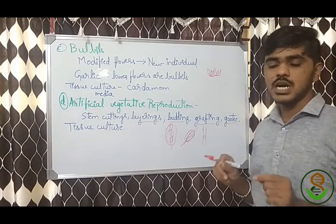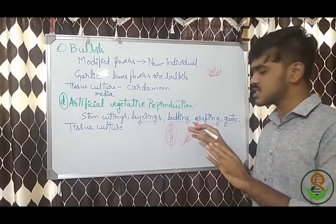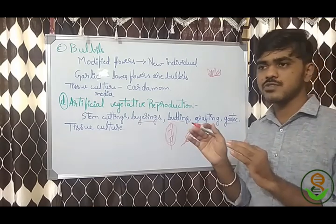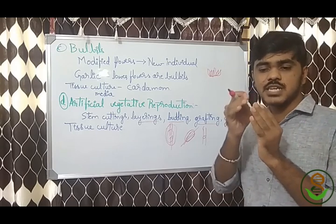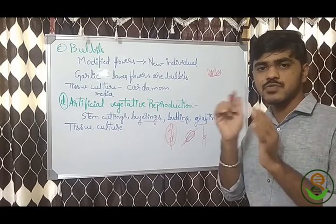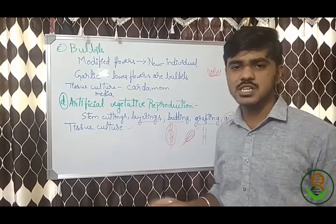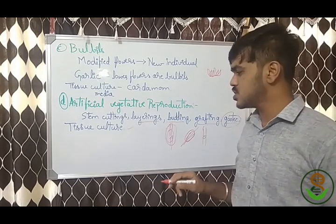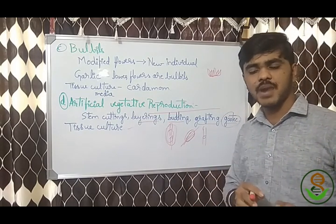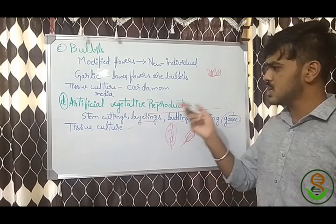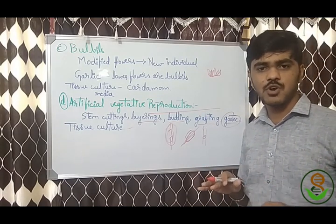Guttee (gooting) involves inducing roots in a branch of a plant. When roots emerge, we cut that branch at the rooted point and plant it to get a new plant. Tissue culture is used in banana and sugarcane. Layering, budding, and grafting are commonly used in orchard and fruit plants. These are the main artificial vegetative reproduction methods.